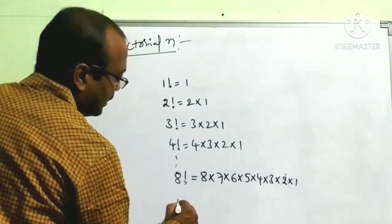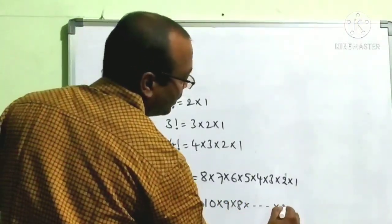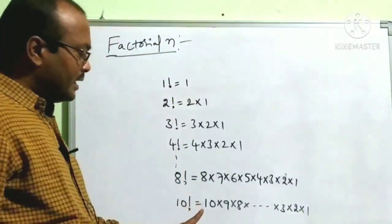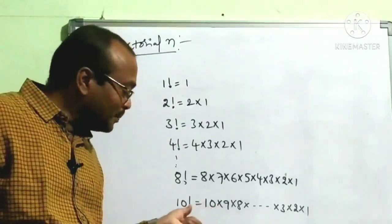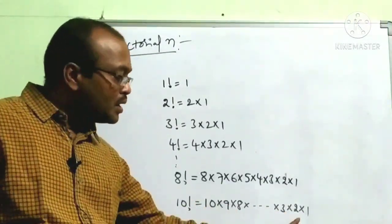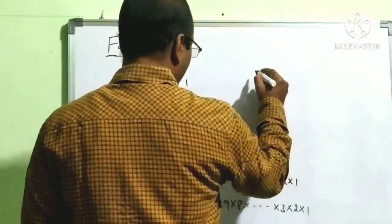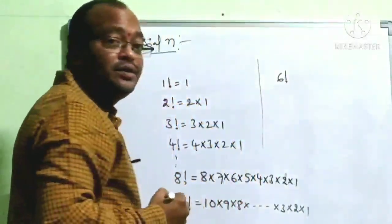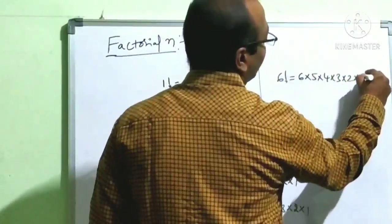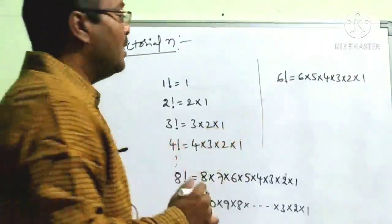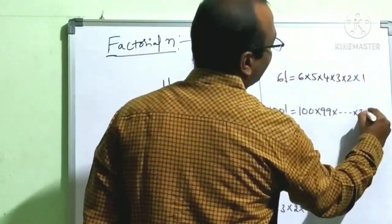One more thing: suppose 10 factorial. We write it as 10 × 9 × 8 × ... × 3 × 2 × 1. And 100 factorial means 100 × 99 × ... × 3 × 2 × 1. So any factorial is nothing but the product of that many positive integers, starting from that number and decreasing down to 1.